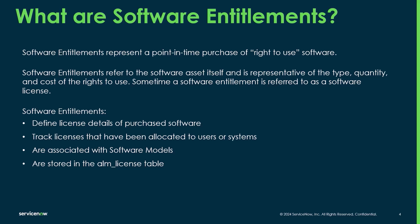Software entitlements define the license details of purchased software. It's important when gathering those entitlements that you capture details like the PPN, which is the publisher part number, the cost, the quantity, etc. They also track the licenses that have been allocated to those users or systems. Allocating entitlements really helps the software asset manager validate that that user or system is actually approved to use that entitlement.